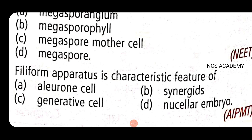Next, an important AIPMT question: the filiform apparatus is the characteristic feature of synergids. The filiform apparatus is a mass of finger-like projections of the wall into the cytoplasm. It is present in synergids, the helper cells of the embryo sac, in the micropylar region. It guides the pollen tube inside the ovule towards the embryo sac.